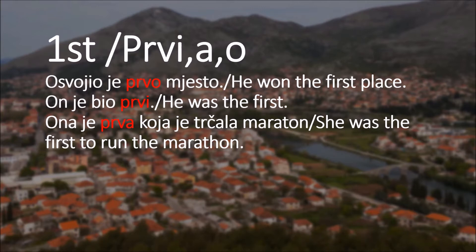The third example: ona je prva koja je trčala maraton - she was the first to run the marathon. We use prva because we're talking about her, ona is our subject. Ona is feminine, so that's why we're using prva instead of prvi or prvo.